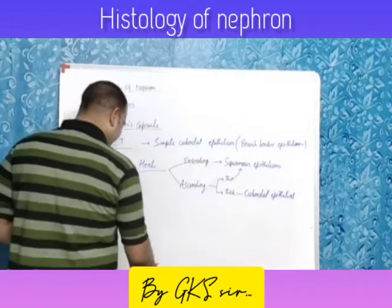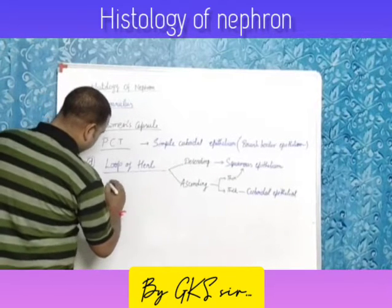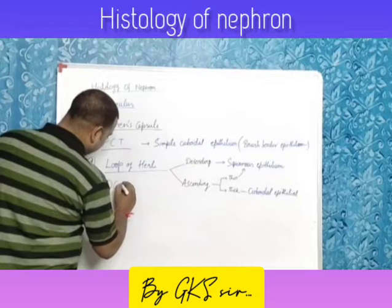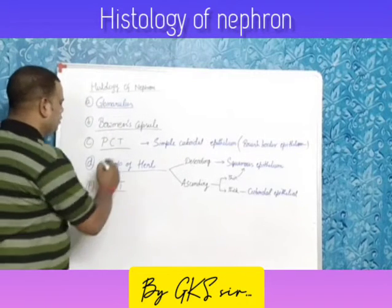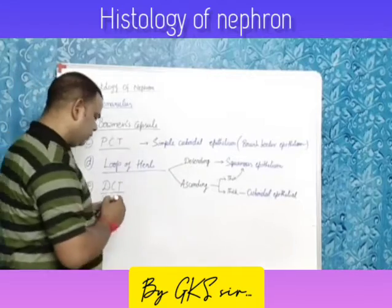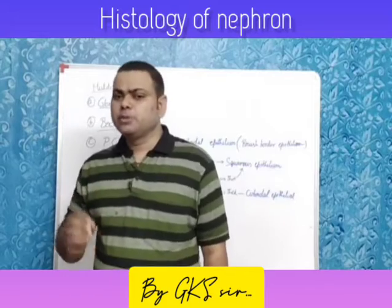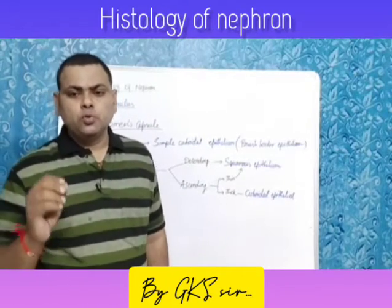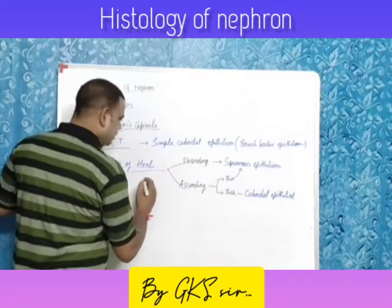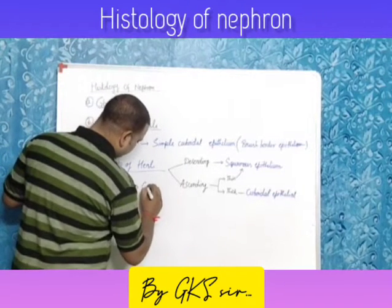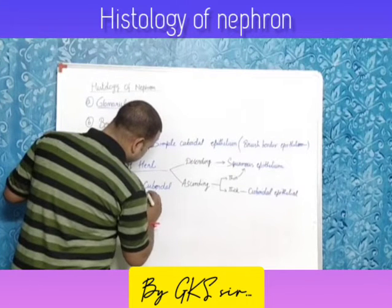Next is the distal convoluted tubule, or DCT. The DCT is made up of cuboidal epithelium which is glandular in nature, giving it a gland-like appearance.